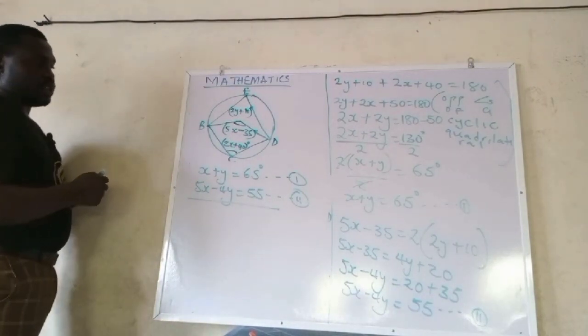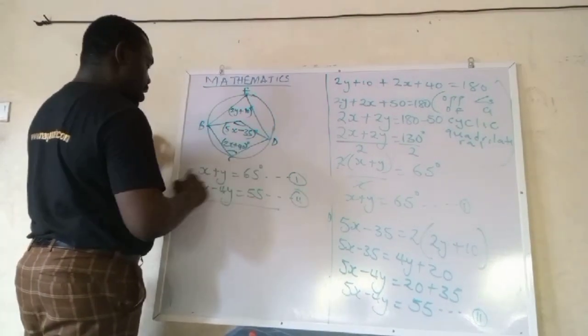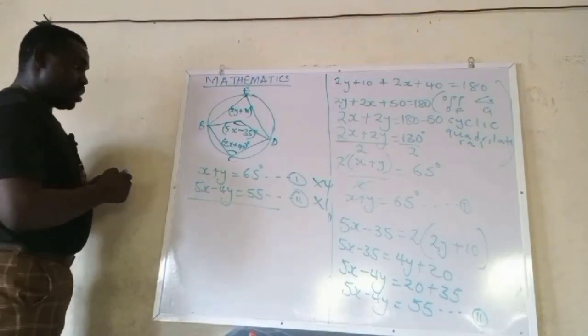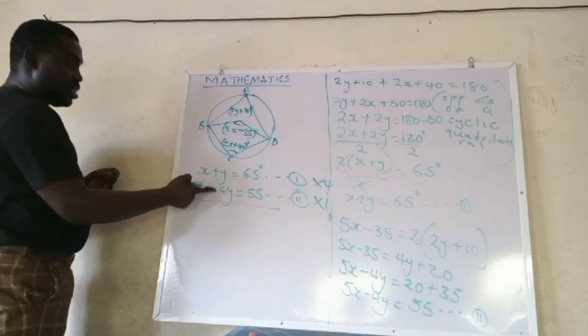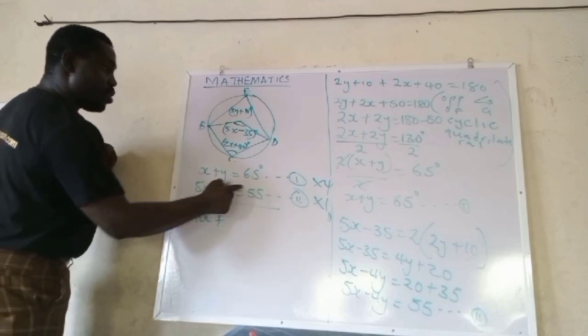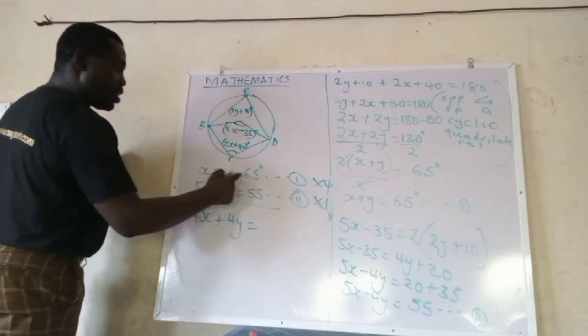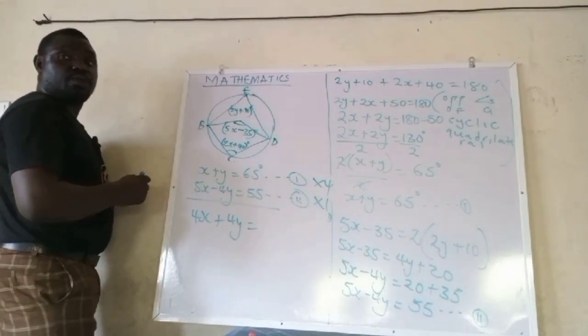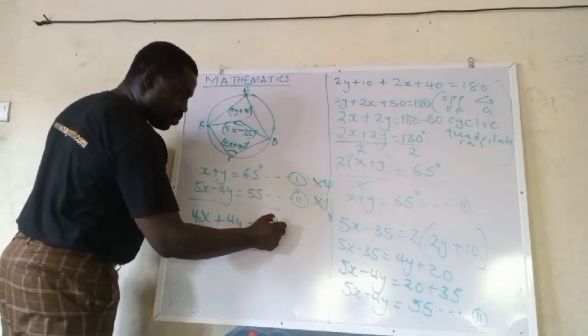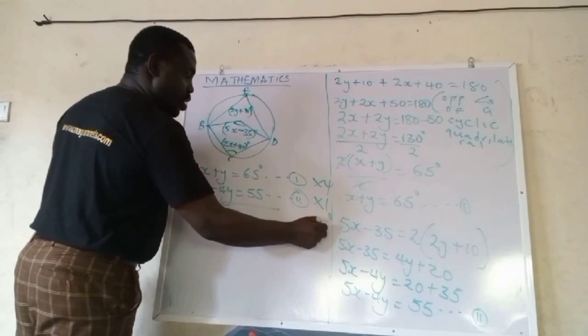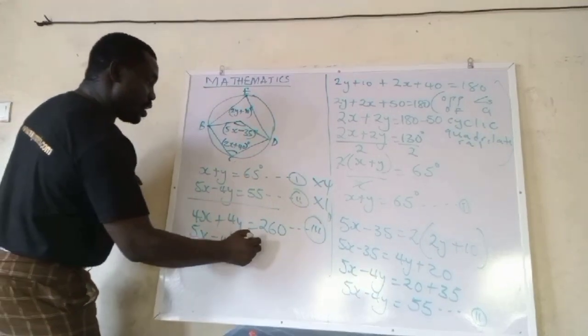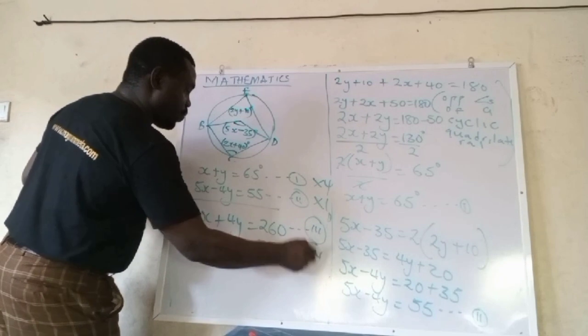We have our equation 1, x plus y equals to 65, and our equation 2, 5x minus 4y equals to 55. Now we have to multiply, if we are using elimination method, multiply equation 1 by 4, equation 2 by 1. With that we can have same coefficient here. So 4 times x we have 4x, 4 times y we have 4y, 4 times 65 is 260. That's equation 3.